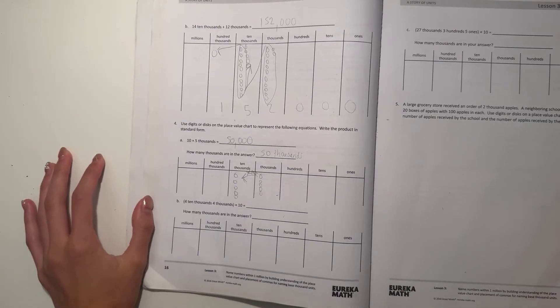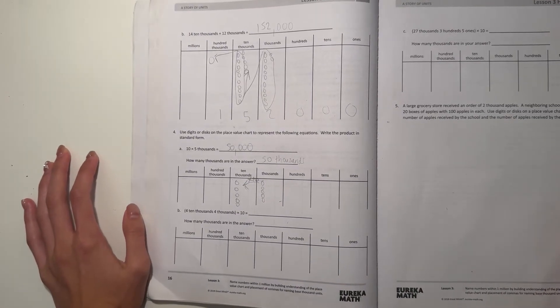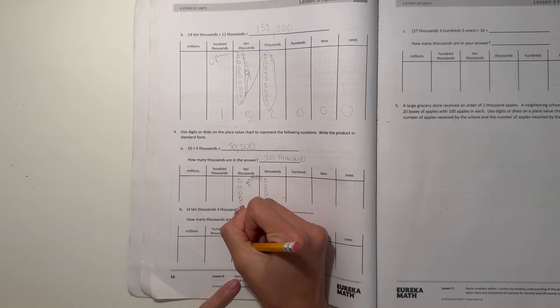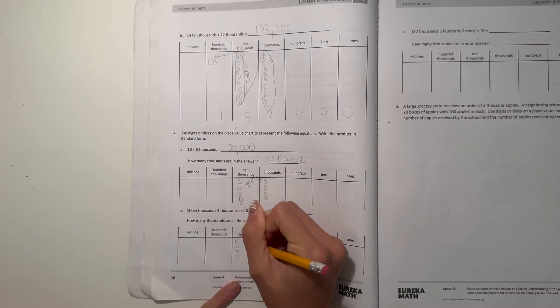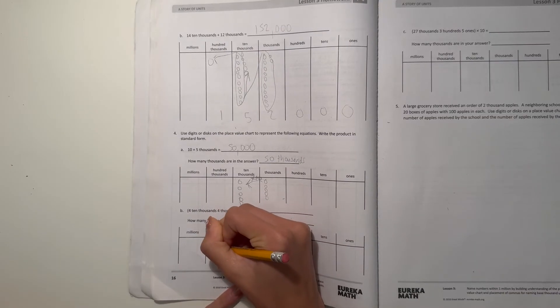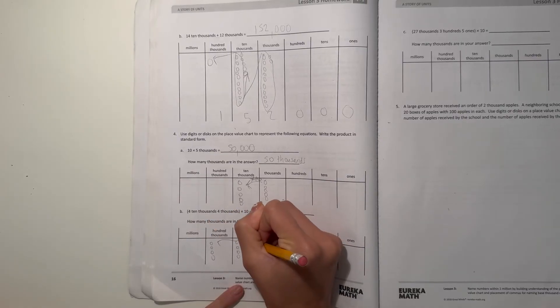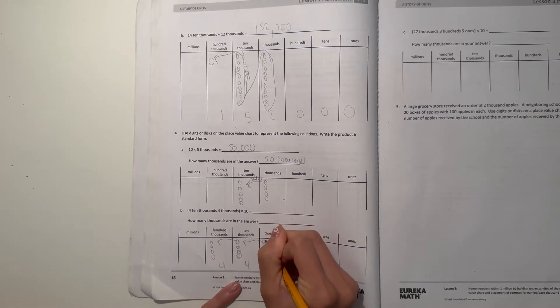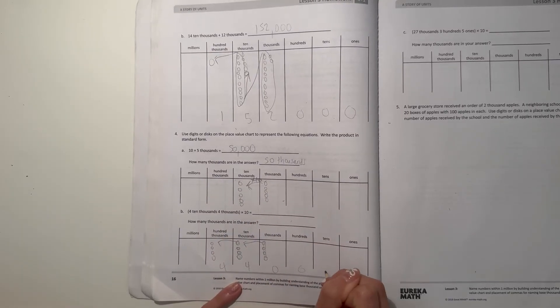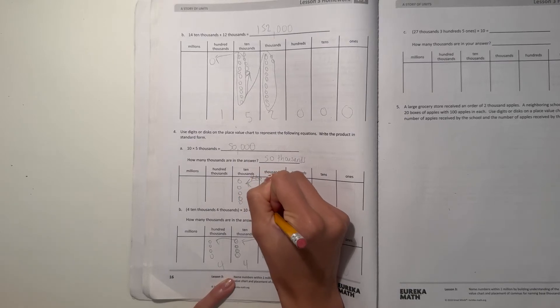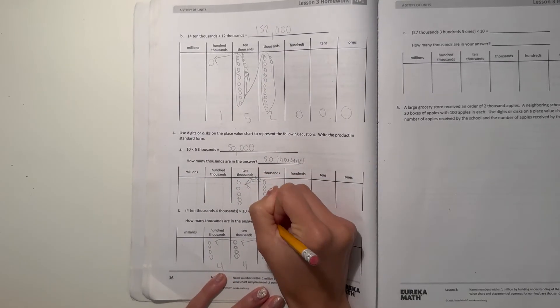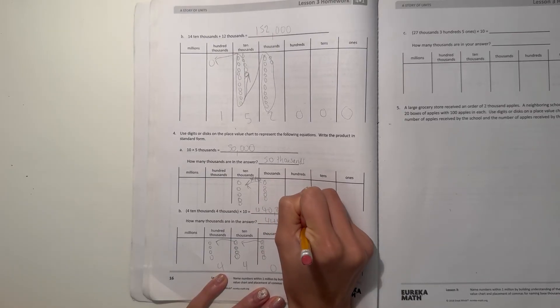And B, we have 4,000, 4,000 times 10. Let's see, 4,000, 4,000. So times 10, that would be 1, 2, 3, 4. So that would be 4, 4, 0, 0, 0, 0, 0. So that would be 440,000. So how many thousands are there? There's 440,000.